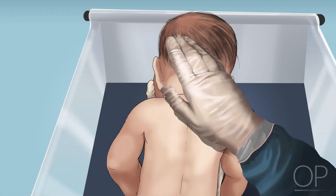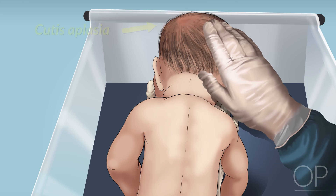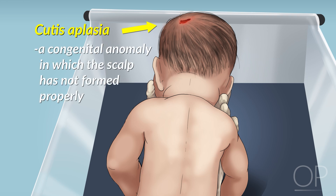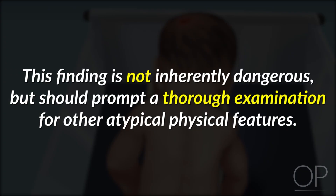Finally, run your fingers over the skin of the infant's scalp. If you feel any areas where the skin is missing or has an unusual texture, it may be a sign of cutis aplasia, a congenital anomaly in which the scalp has not formed properly. This finding is not inherently dangerous but should prompt a thorough examination for other atypical physical features.